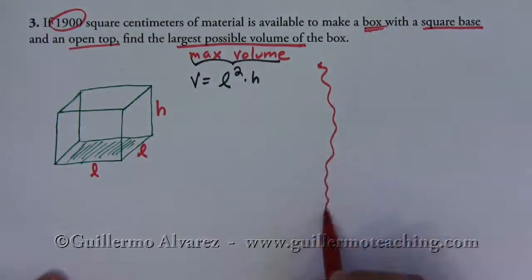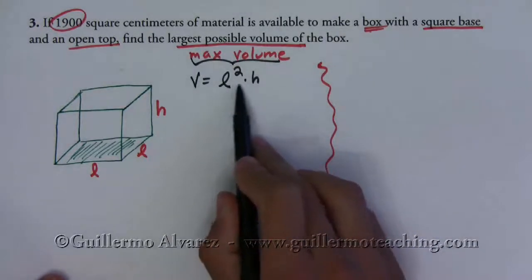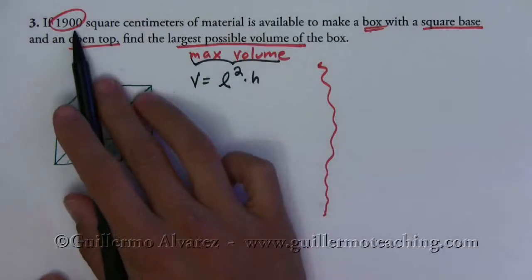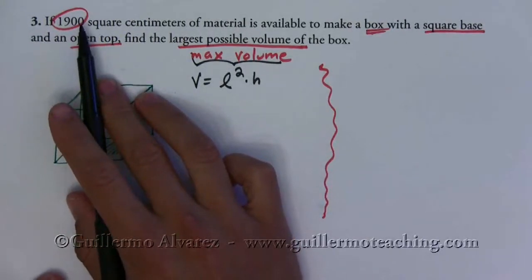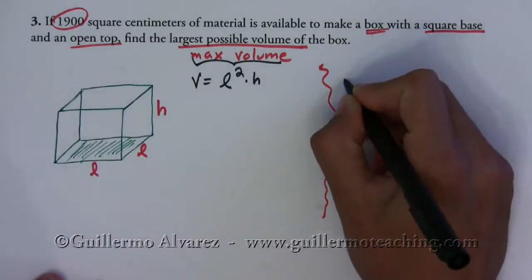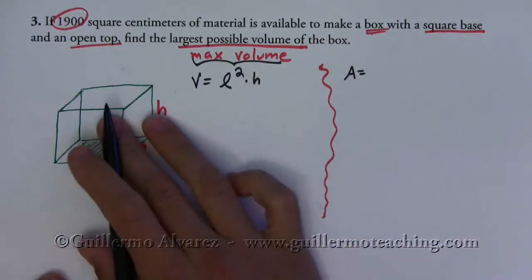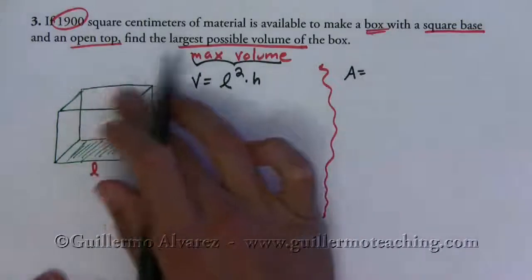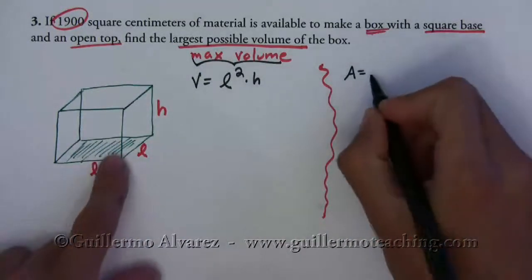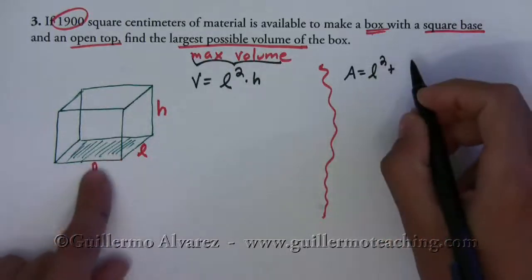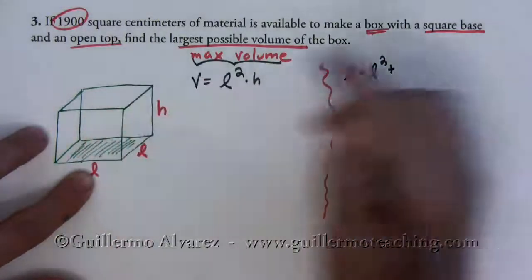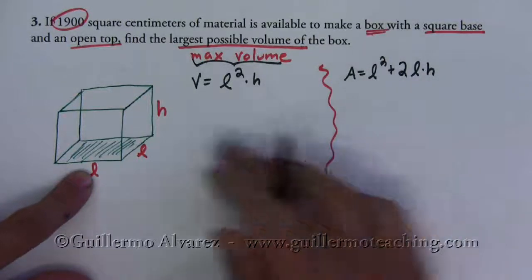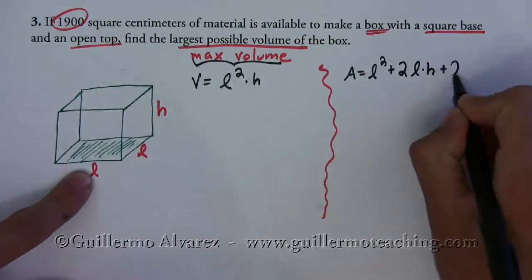So we need to do a little extra work. We need to use something that we're given to write down one of these variables in terms of the other, and what I have is this 1900 square centimeters. So the surface area of this box, if you imagine all the different sides separately, notice that the top is open so we don't need anything there. So what we're going to have is the bottom part which the area is l squared, plus the front and the back which is two l times h, and then we have two sides which is another two l h.